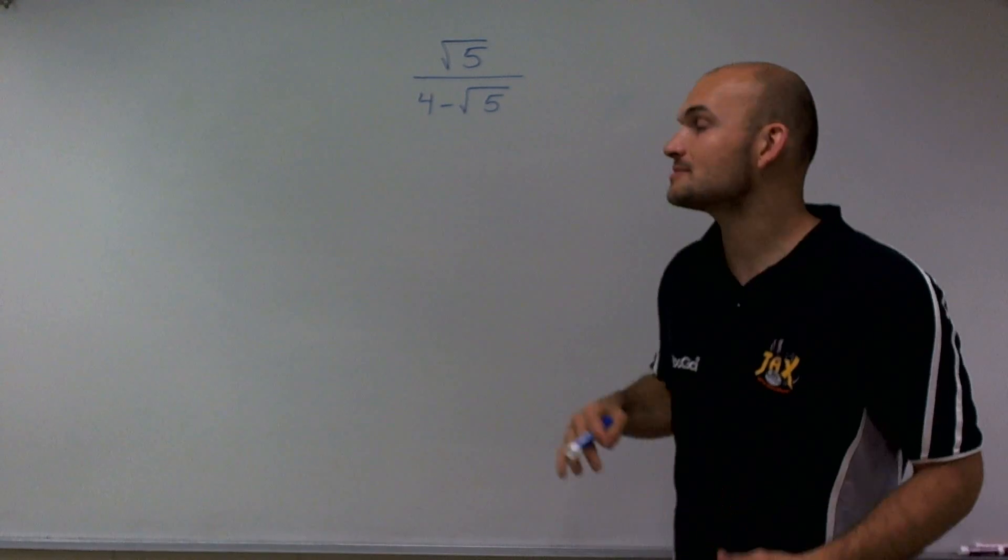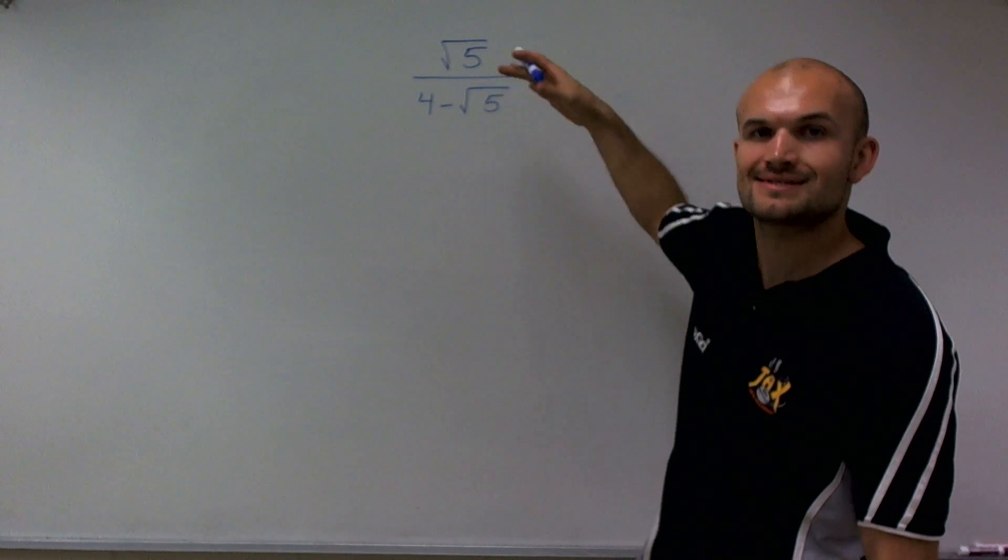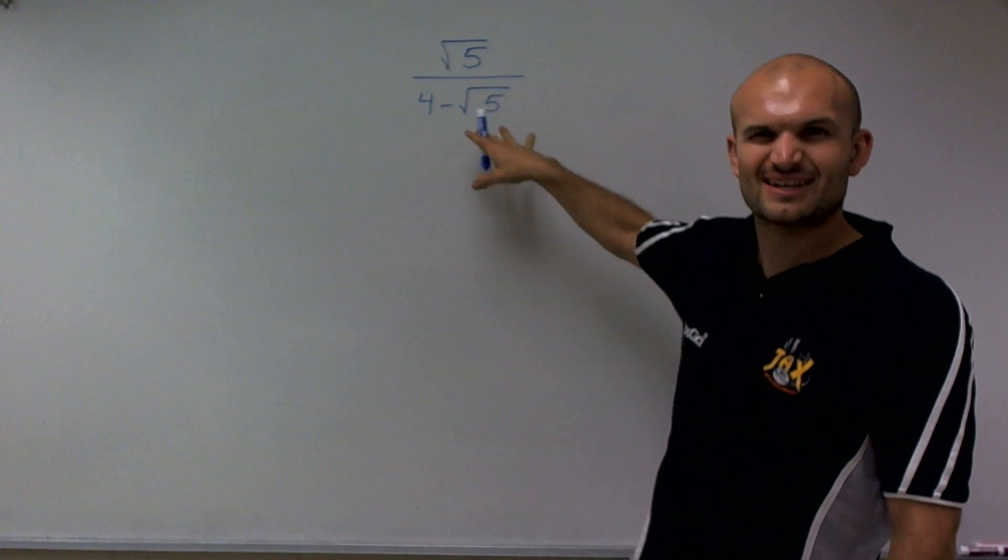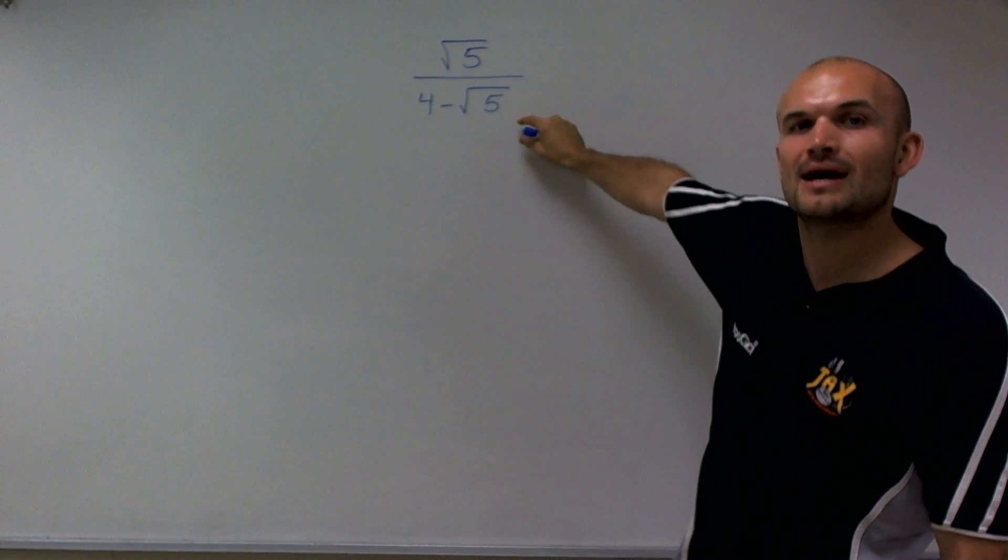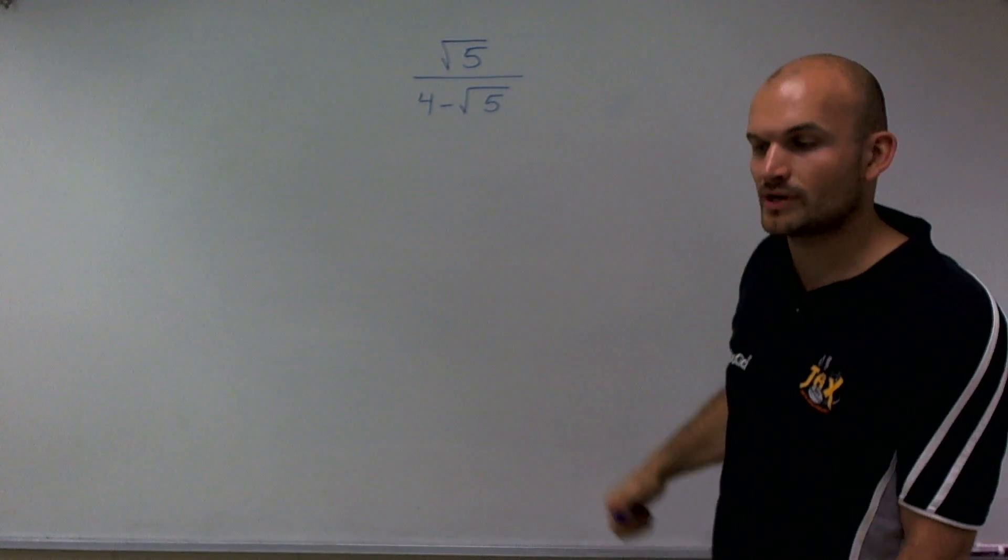So when simplifying this radical expression, they're asking us to divide by this radical expression. We don't really want to do this because I don't want to be dividing by an irrational number, which is the square root of 5.